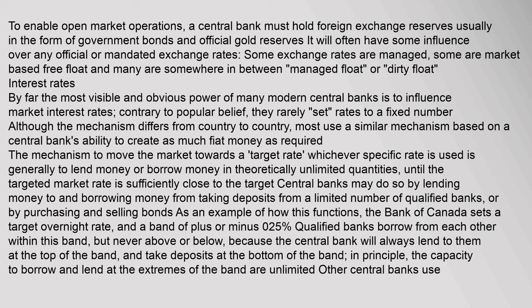By far the most visible and obvious power of many modern central banks is to influence market interest rates. Contrary to popular belief, they rarely set rates to a fixed number. Although the mechanism differs from country to country, most use a similar mechanism based on a central bank's ability to create as much fiat money as required to move the market towards a target rate. Central banks may do so by lending money to and borrowing money from a limited number of qualified banks, or by purchasing and selling bonds. As an example, the Bank of Canada sets a target overnight rate and a band of plus or minus 0.25%; qualified banks borrow from each other within this band, but never above or below.